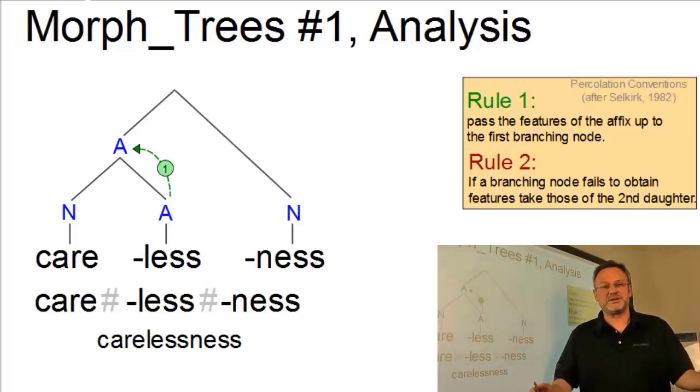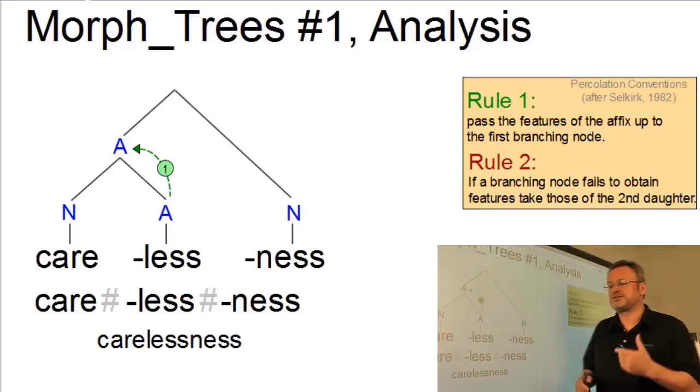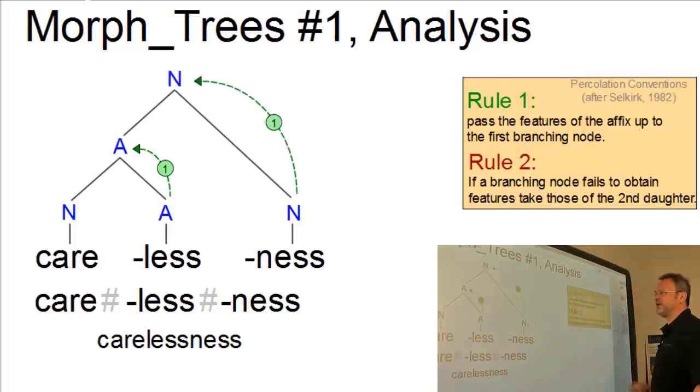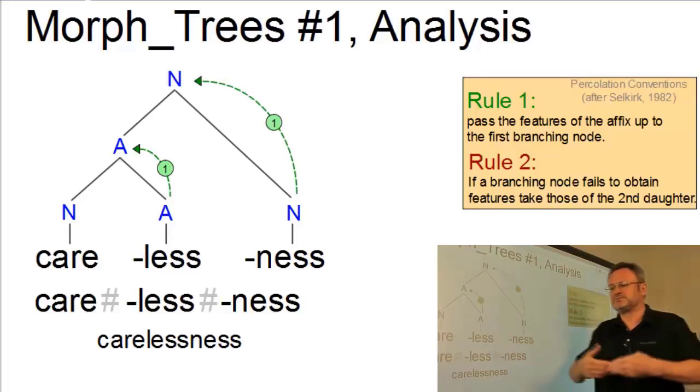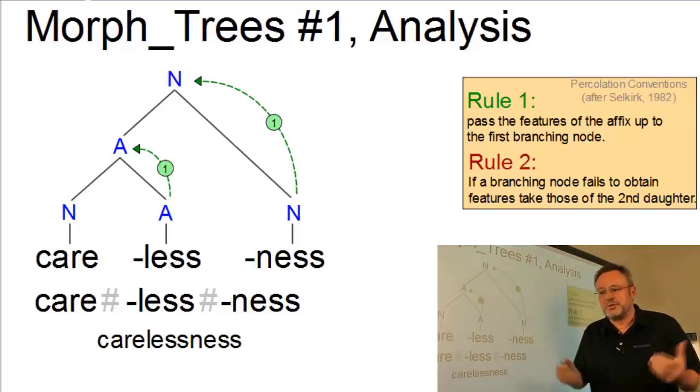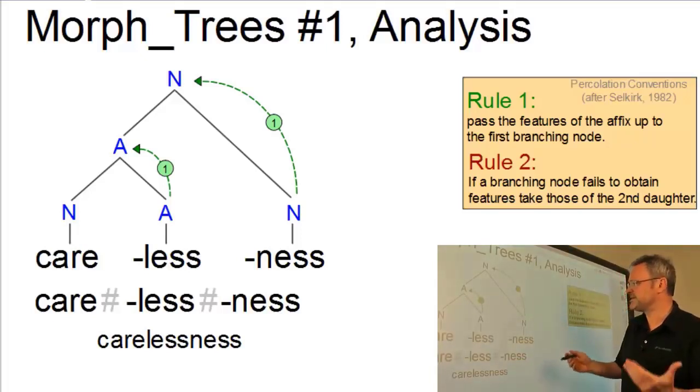And again, we can assign the syntactic features, that is the categories of the affix, to the new mother node. And again, rule number one applies. We can simply take the percolation conventions and apply rule number one, which passes the features of the affix to the new branching node. Okay, so carelessness is a noun.